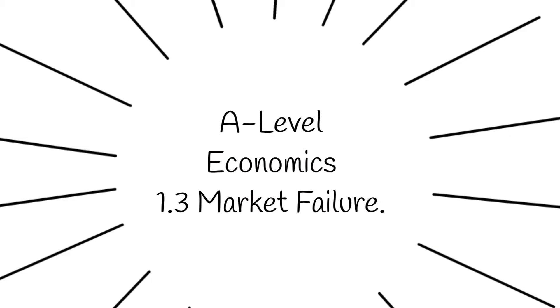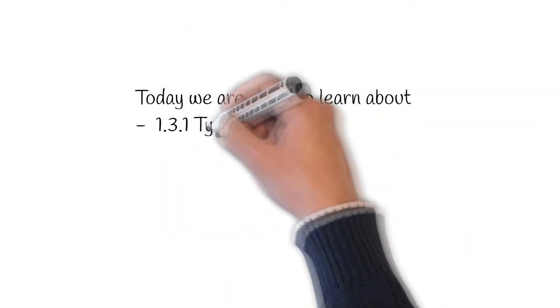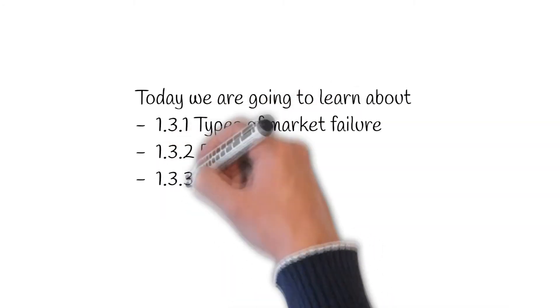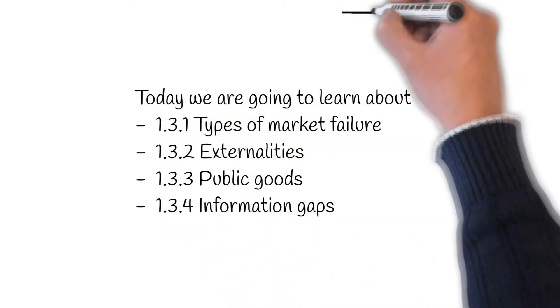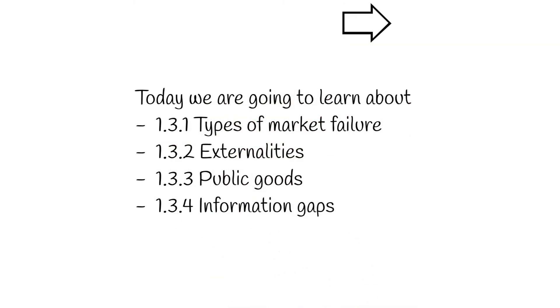Welcome to this video in our series on A-level economics. Today we are looking at 1.3, market failure. Topics covered today are as follows: types of market failure, externalities, public goods, and information gaps.